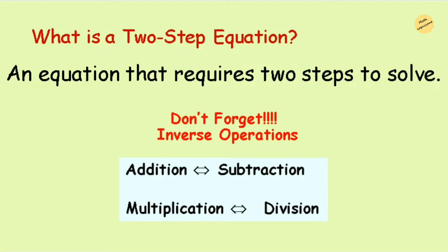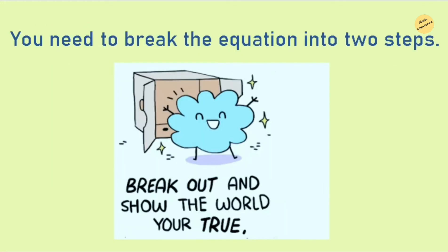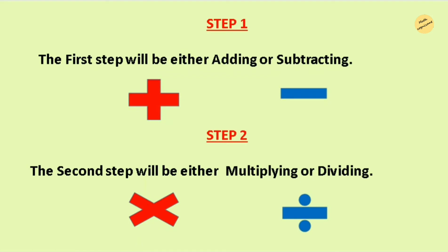To solve two-step equations, we always need to review inverse operations. The inverse of addition is subtraction, and the inverse of multiplication is division. You should break the equation into two steps: the first step will be either adding or subtracting, and the second step will be either multiplying or dividing. Don't forget to do the checking or verification of your answer.